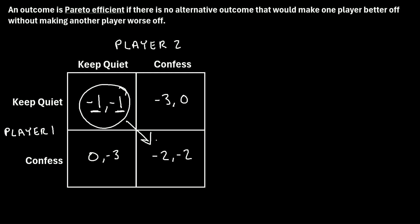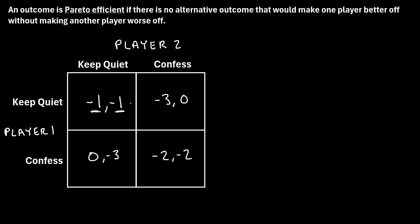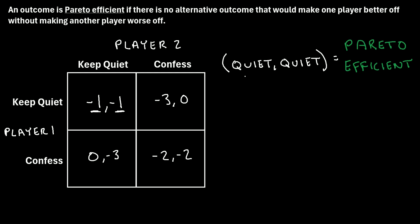What if we moved to another outcome? Both players would be worse off, going from negative one to negative two each. And in the last alternative, player one would go from negative one to negative three — also worse off. Because there is no alternative outcome that would make one player better without making the other worse off, this is a Pareto efficient outcome. When player one keeps quiet and player two keeps quiet, this outcome is Pareto efficient.